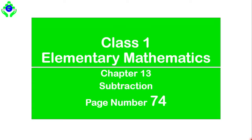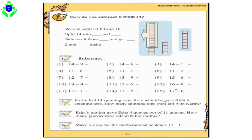Welcome to this tutorial. By seeing this tutorial you will be able to learn about Class 1 Elementary Mathematics, Chapter 13: Subtraction, page number 74. Let's get started. Students, you can see it is page number 74 of your books. There are almost four types of questions. In question number one, these are questions based on subtraction and they are very simple. There are 15 questions.